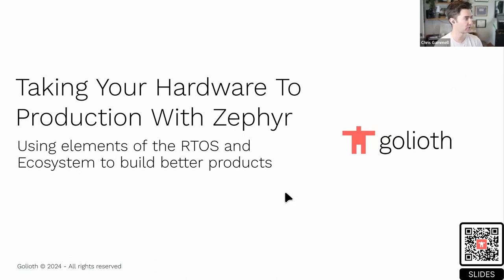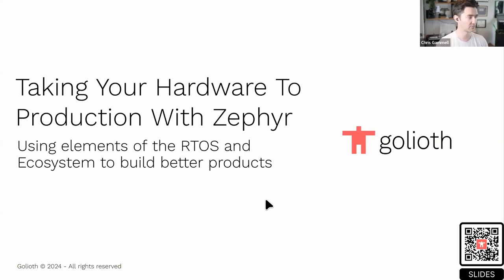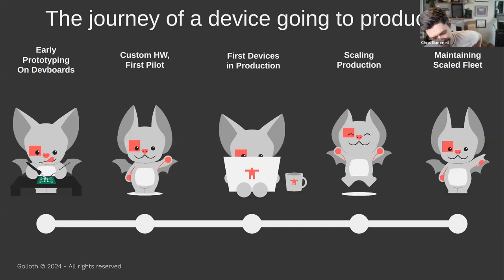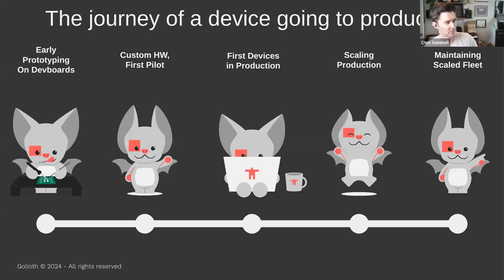I'm going to be talking about taking your stuff to production and all the things that go along with that — really the things around our RTOS and the ecosystem that are going to make you build better products today. We're going to be using our little friend Echo, our new mascot for Goliath. You can see there are five stages, and I'll go into each one individually as we go through the presentation.